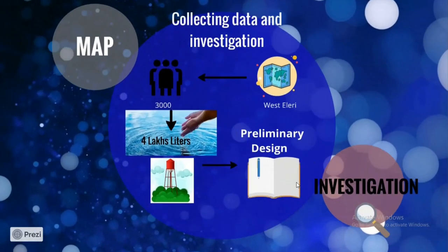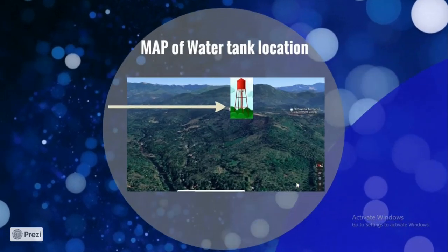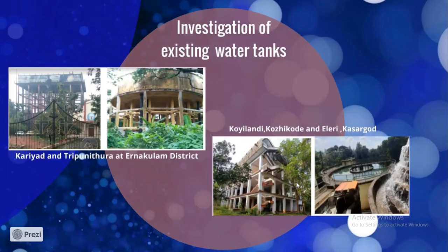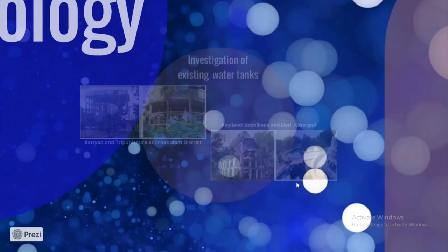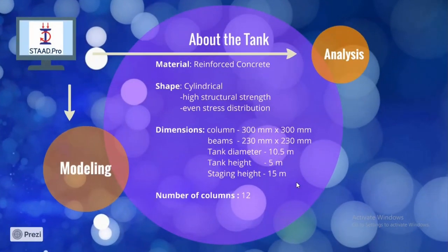West LAD has a population of 3,000. From per capita demand, we fix the capacity of the water tank as 4 lakh liters and perform preliminary design. This is a map of our location. Initially, to arrive at this, we investigated water tanks nearby our locality. These are the features of our water tank.